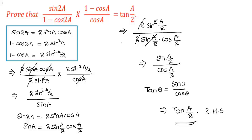Hence, sin 2a divided by 1 minus cos 2a into 1 minus cos a divided by cos a equals tan a by 2. We have proved the given example. Hope you understood the concept. Refer to more videos on trigonometric ratios. Do like and subscribe to VDG Academy. Thanks for watching, have a nice day.